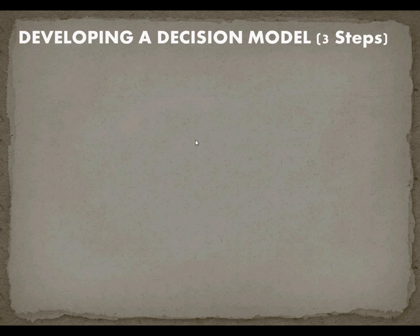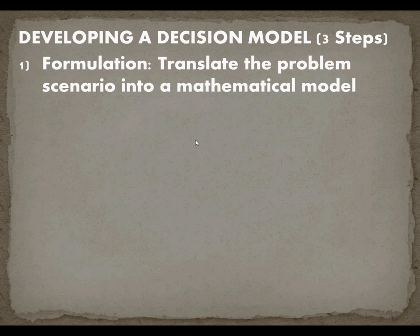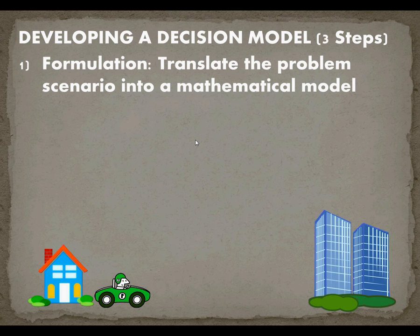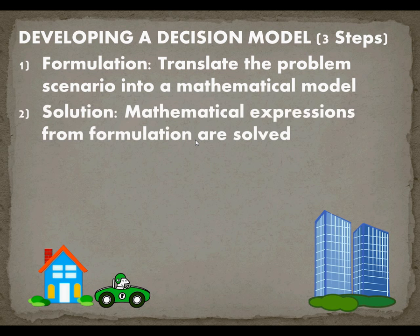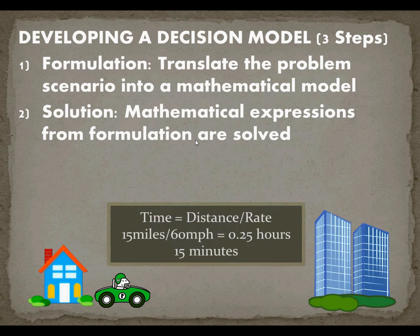So what are the three steps of developing a decision model? The first is formulation: translating the problem scenario into a mathematical model. In our example where I'm driving to work, this is what time do I need to leave home to be at work on time? I took the equation distance equals rate times time as my model. The second step was to solve it. I'm going to take that mathematical expression and rearrange it, collect my data, and get an answer. Time equals distance divided by rate: 15 miles divided by 60 miles per hour is a quarter of an hour or 15 minutes.